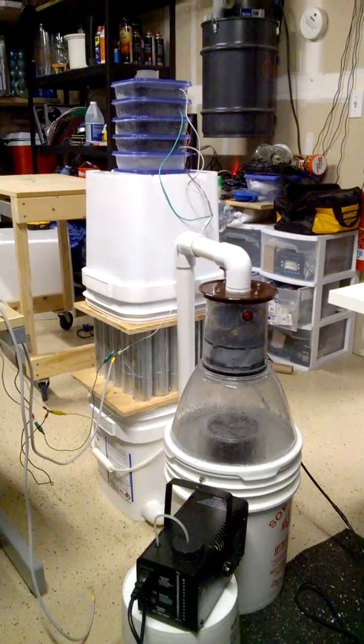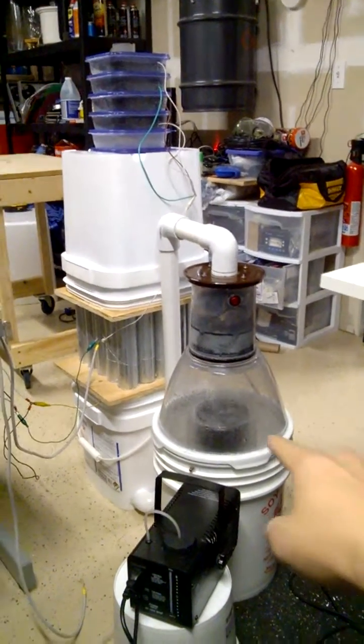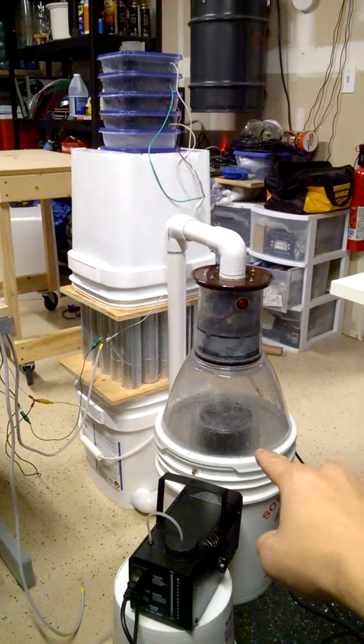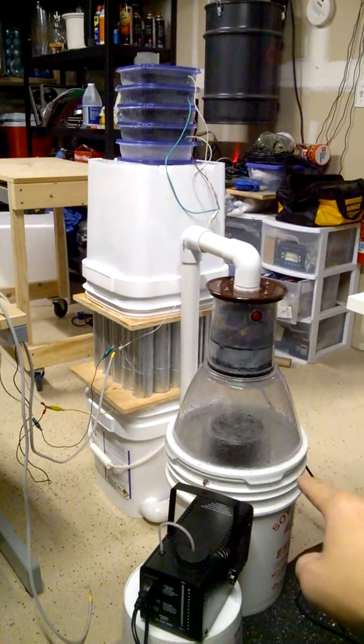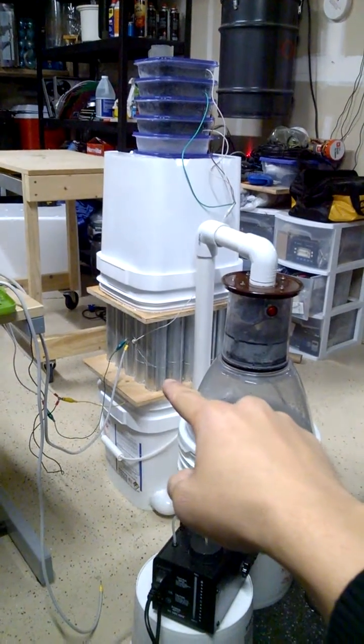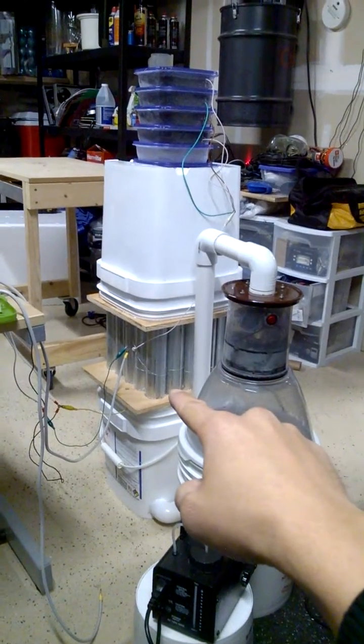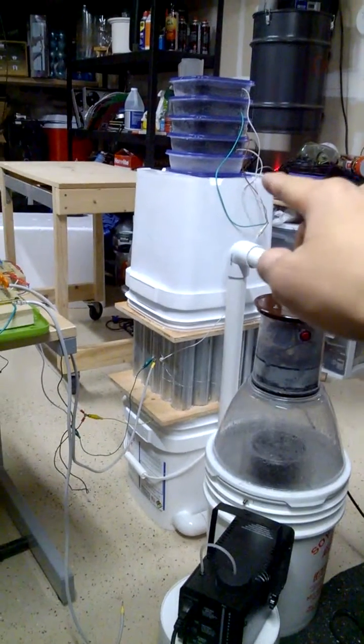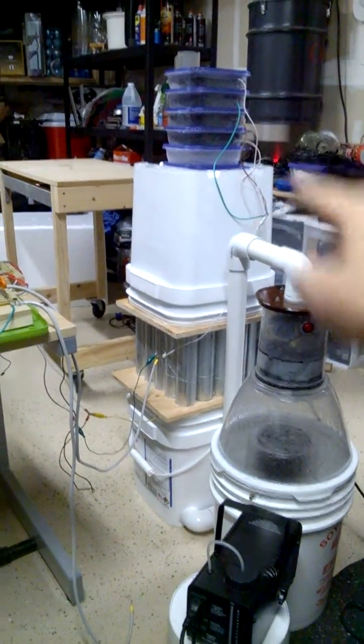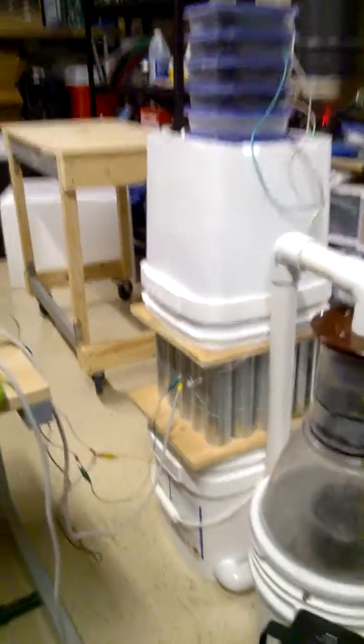My entire electrically enhanced wet scrubber system: I first have a cyclonic wet scrubber which captures the large particulates, and then a tube electrostatic precipitator capturing the fine particulates, and then activated carbon pods to capture volatile organic compounds.